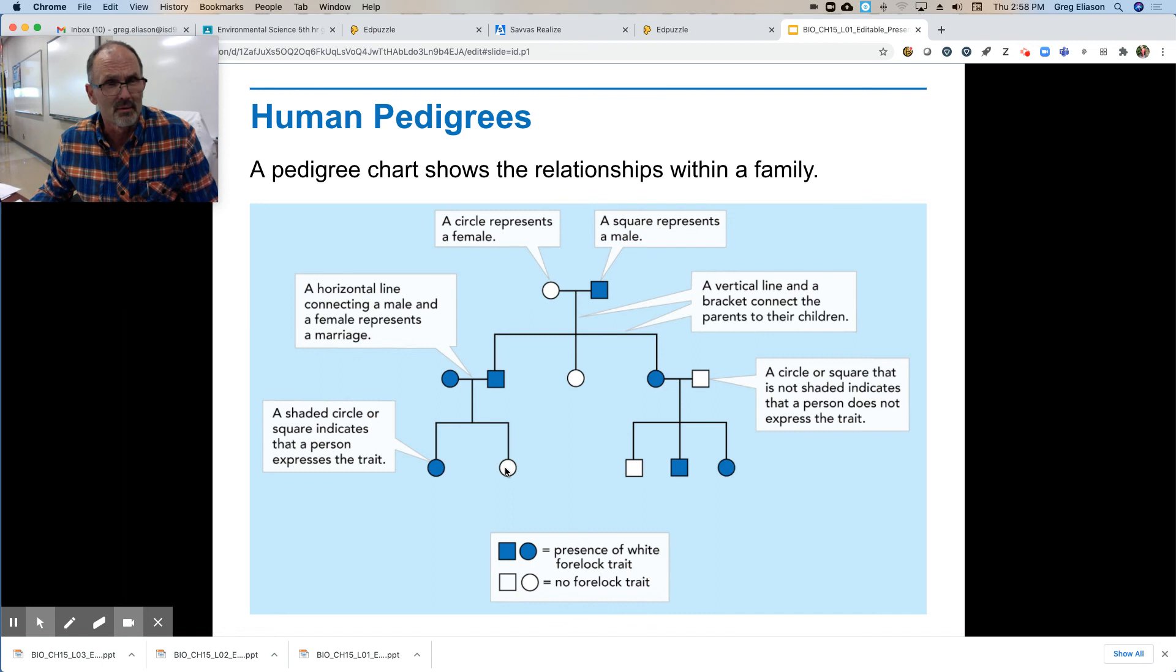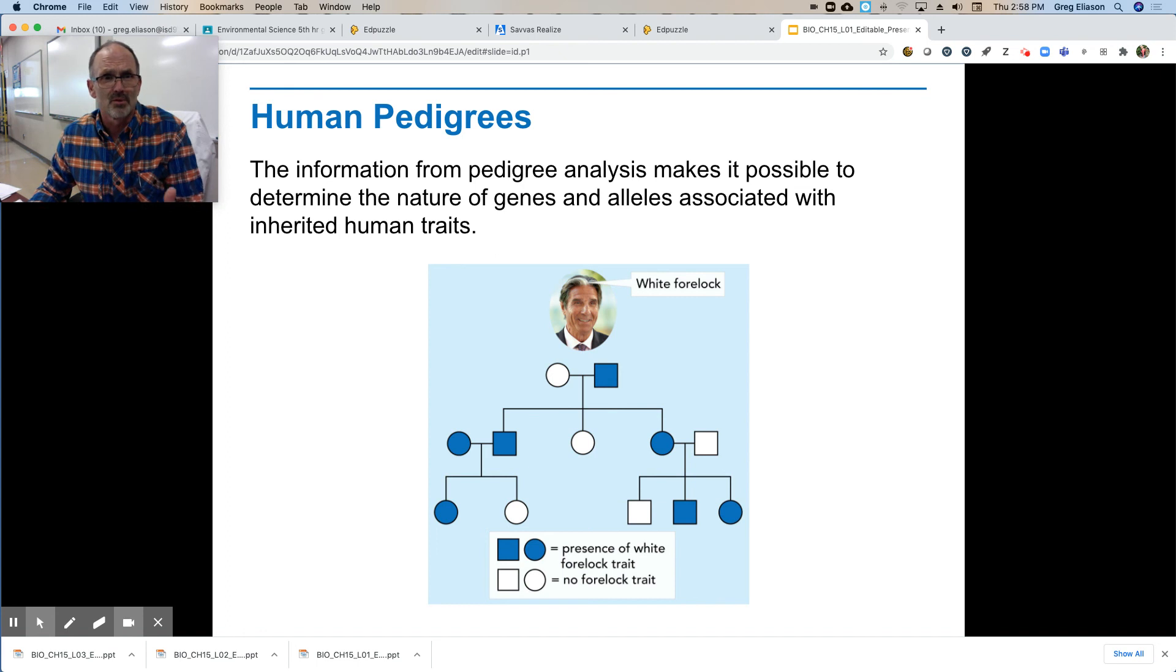predict what kind of an inheritance pattern that's going with. So is it all males that's getting the trait? Could it be recessive? Is it dominant? So, all right. So in this example,